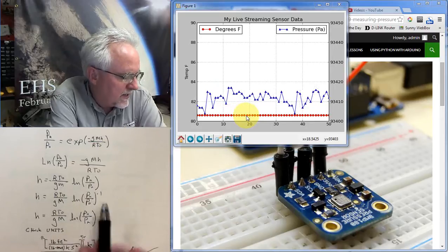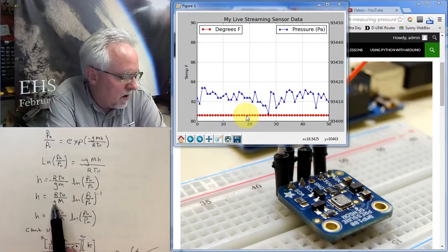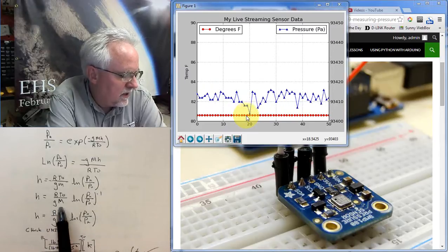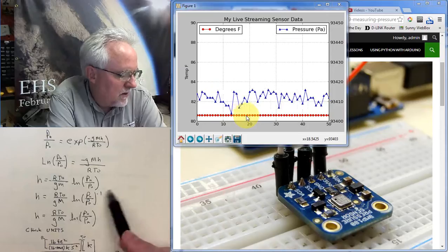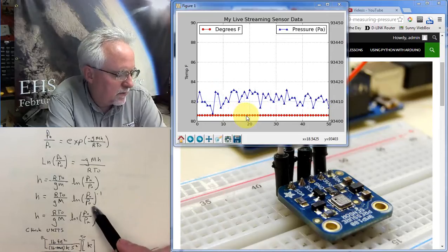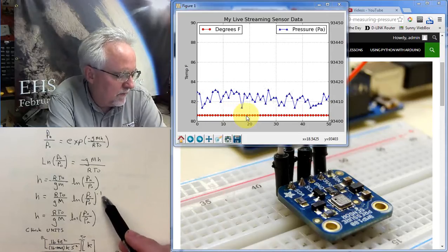And so I take that minus 1 and I move it up here. So I have H is RT over gm, natural log of the pressure at the height divided by the pressure at the floor to the minus 1. Well, taking a term to the minus 1 inverts it,